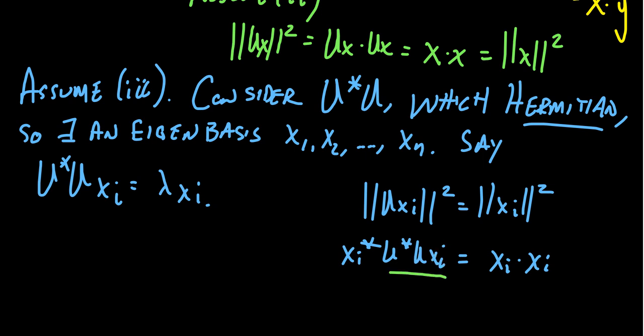But then when we look at this statement here, U star U xi, that is where we can pull out the eigenvalue. Lambda, lambda i I should say, is equal to xi star dot xi. And this equals xi dot xi.